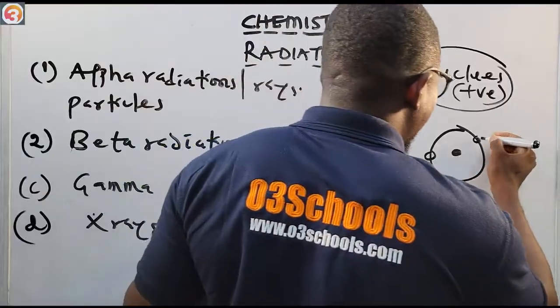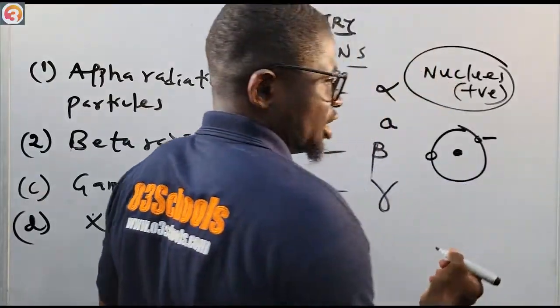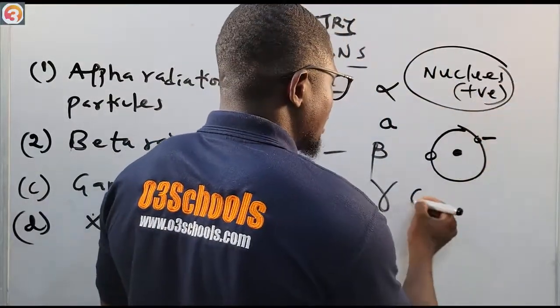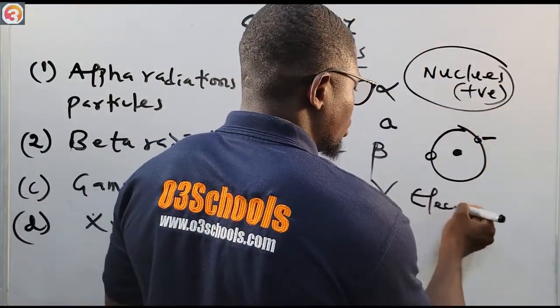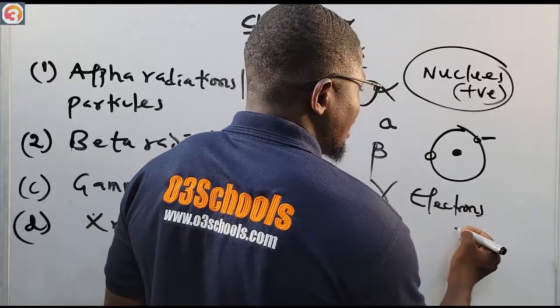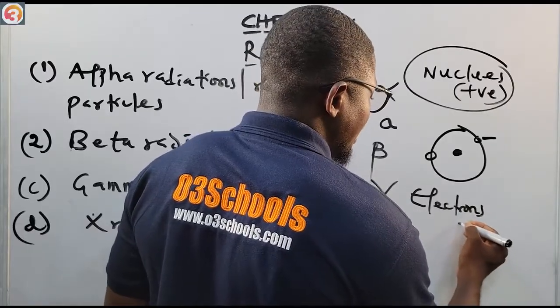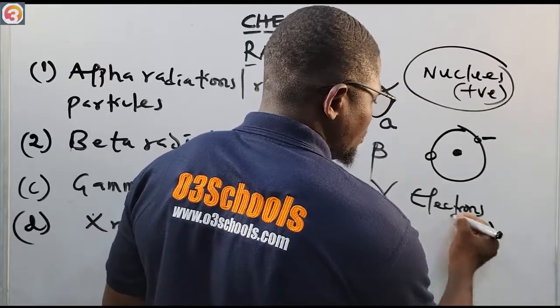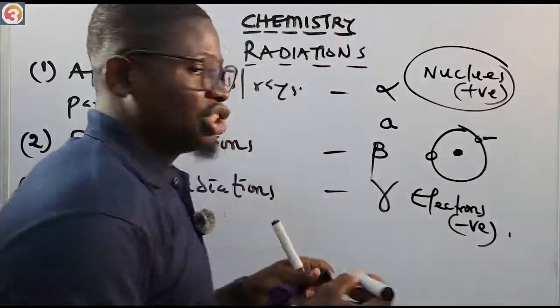The nucleus is positively charged, and electrons revolving around the nucleus are negatively charged.